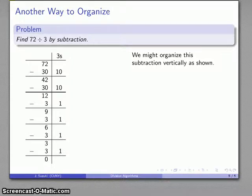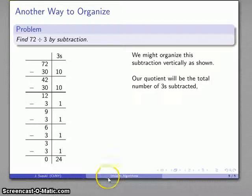And so I can organize the subtraction of these sets of 3 vertically, and the number of 3's that I've subtracted is just going to be the sum in this column. That's 10, 20, 21, 22, 23, 24. So I've subtracted 24 threes all together. And so my quotient, 72 divided by 3 equals 24.